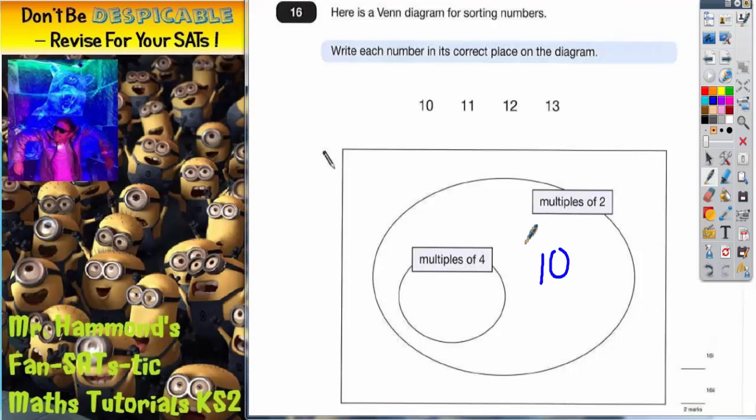Okay, number 11 is not in the 2 times table and it's not in the 4 times table, so it can't go in either of these two places. So if it can't go inside either oval, it must go outside the two ovals, and that's what this space is for, outside the two ovals. So number 11 has got to go somewhere outside the two ovals.